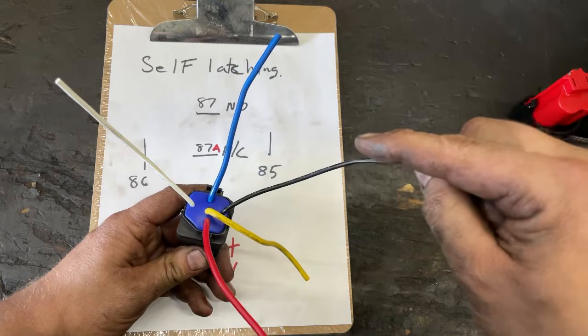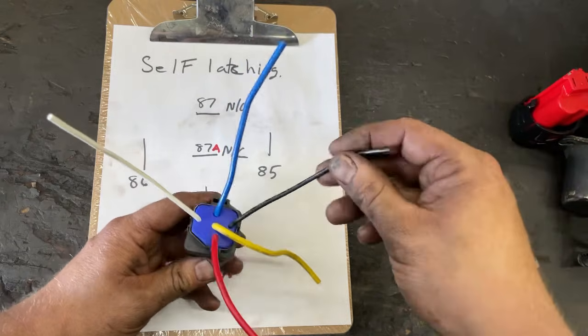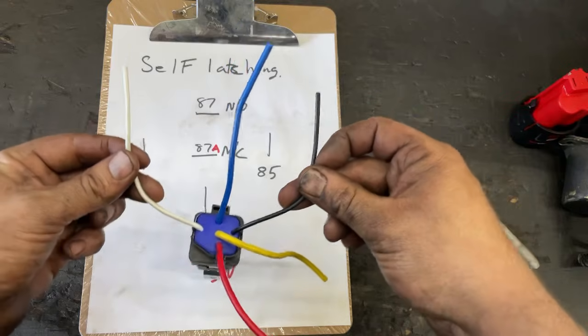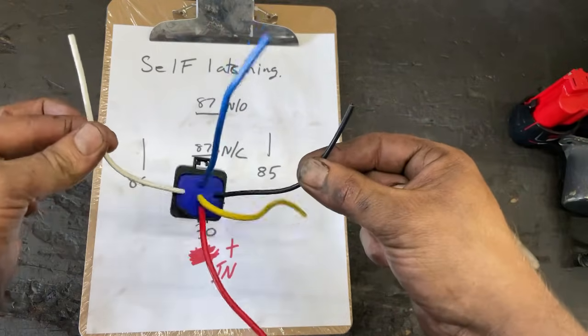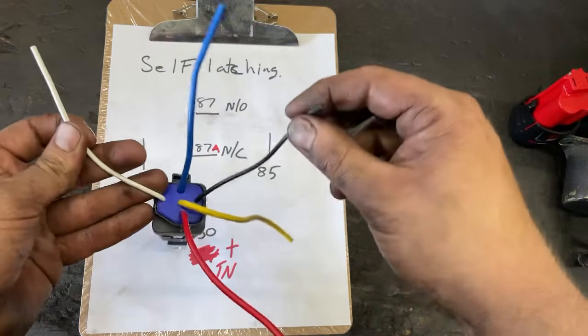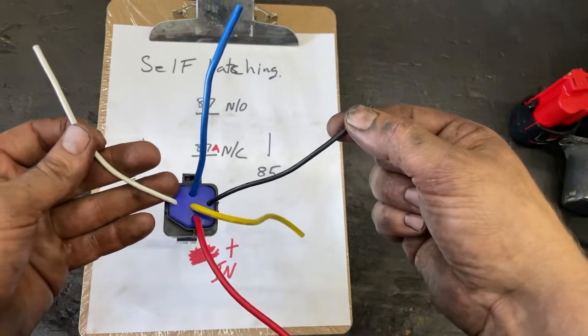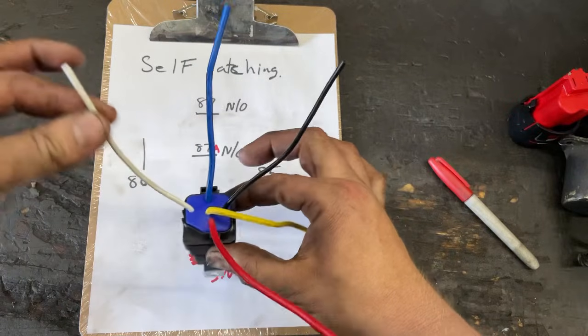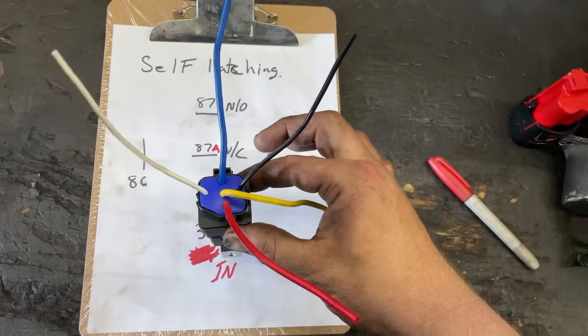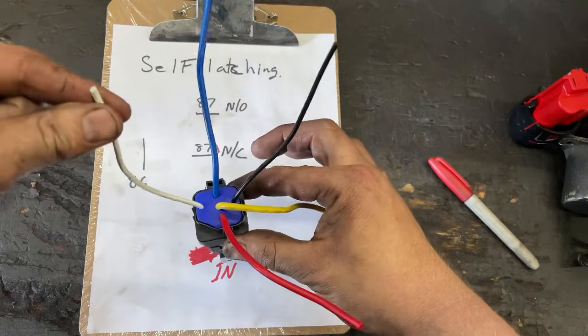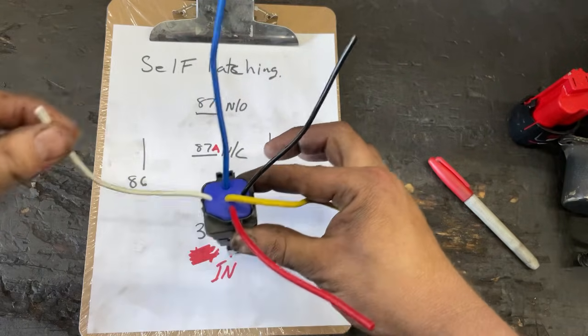And then these ones, now it doesn't matter which one of these is which. Some people will argue with you, but it does not matter. So this can be a ground, this can be a power, or vice versa. But you'll need to go to chassis ground or battery ground, usually chassis ground because you're not right beside the battery. And then this is how you're going to turn it on and off. So if you want to turn it, you need to have a power signal, so you need to have power going to this to turn it on and off.